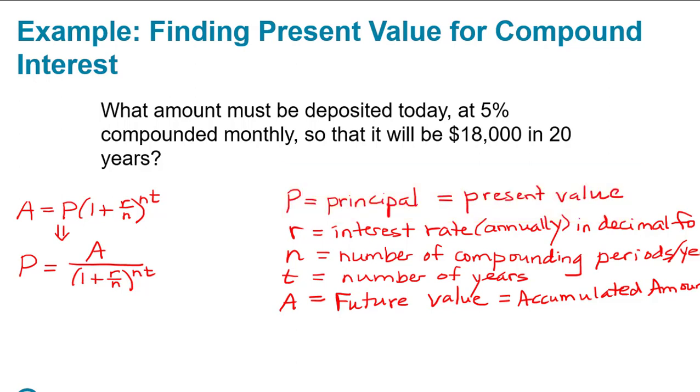The question is, what amount must be deposited today at 5% compounded monthly so that it will be $18,000 in 20 years? So we're looking for the amount P that we're investing today.